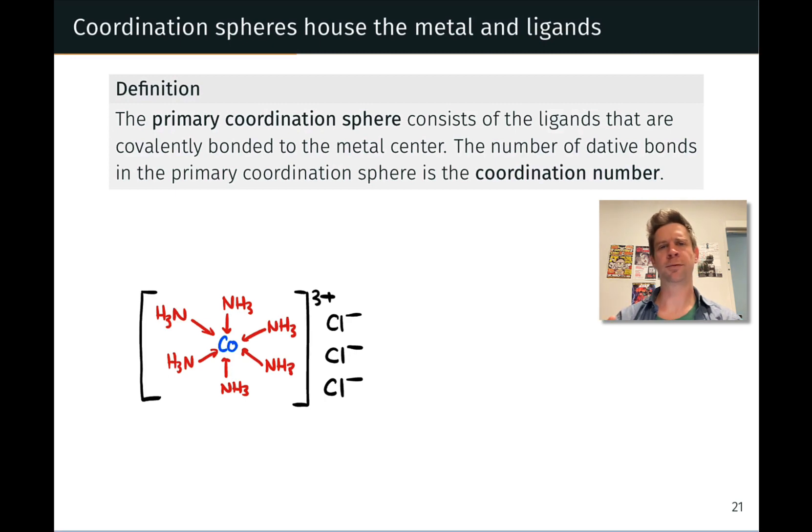First, we're going to talk about coordination spheres, distinguishing between what we'll call the primary coordination sphere and the secondary coordination sphere in a coordination compound. The primary coordination sphere contains the metal center and the ligands that are actually coordinately covalently bonded to the metal center.